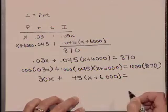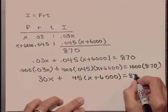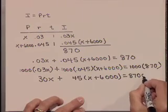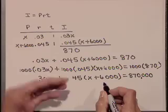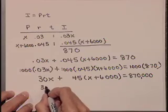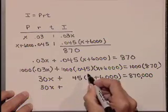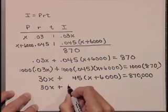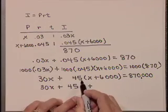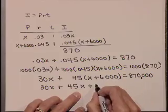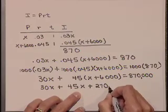870 with three zeros, or 870,000. Let's continue to solve. 30X plus distributing that 45 through, that becomes 45X plus 45 times 6,000 is 270,000.